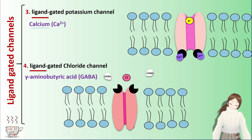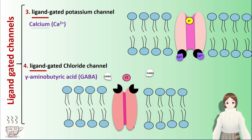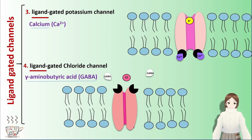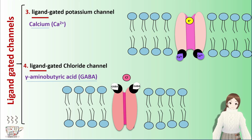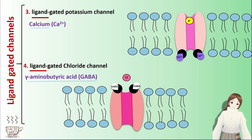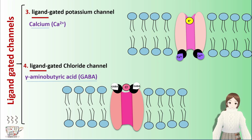The ligand gated chloride channel opens with gamma-aminobutyric acid, or GABA. GABA as a ligand attaches to the channel receptor, then the channel opens and chloride ions transfer across the cell membrane.